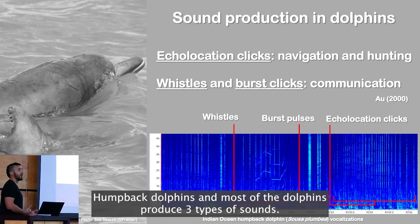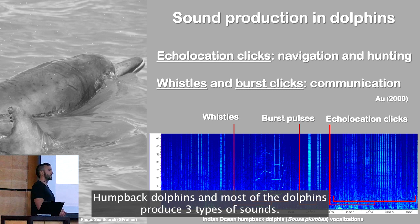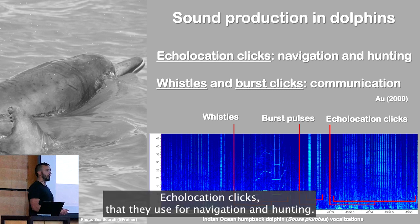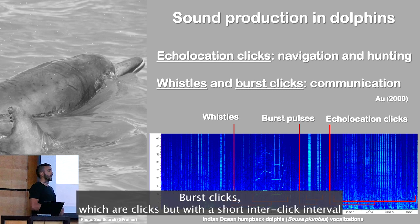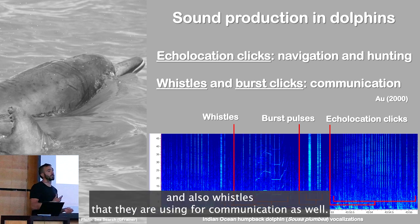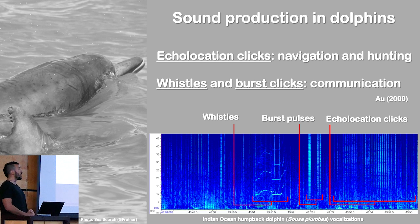Humpback dolphins, and most dolphins, produce three types of sounds: echolocation clicks that they use for navigation and hunting; burst clicks, which are clicks with a short inter-click interval used for communication; and whistles that are also used for communication.